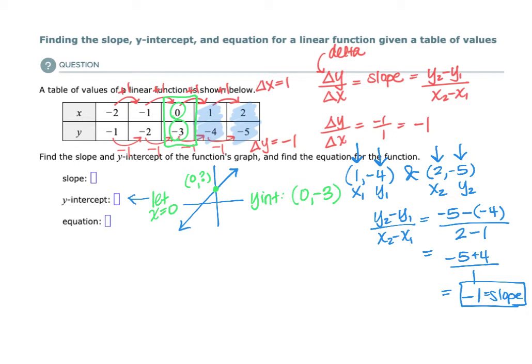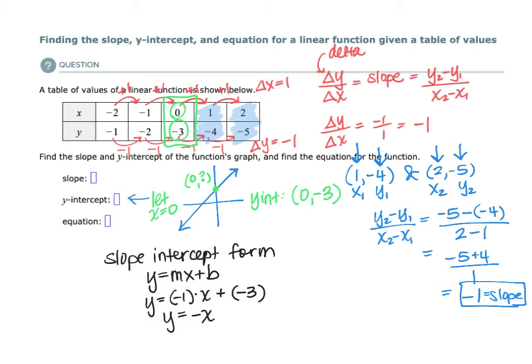Therefore, if you know the y-intercept and you know the slope, then the easiest form to use for a line is called the slope-intercept form. And the slope-intercept form of a line is y equals mx plus b, where m is your slope. So in this case, if our slope is negative 1, that would be negative 1 times x plus the y-intercept, and our y-intercept is negative 3.